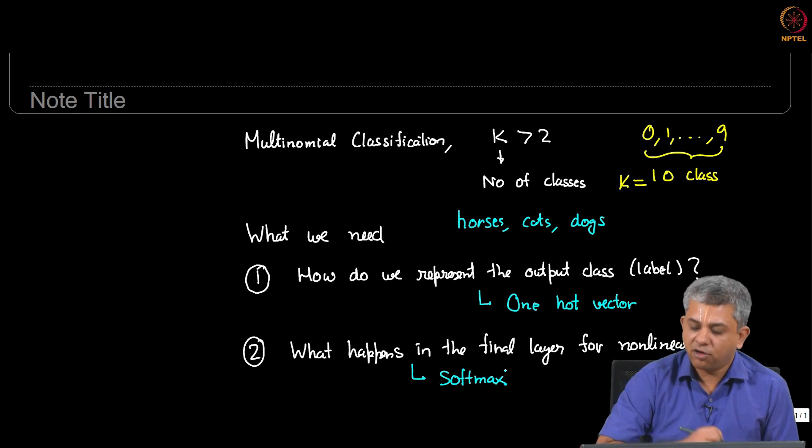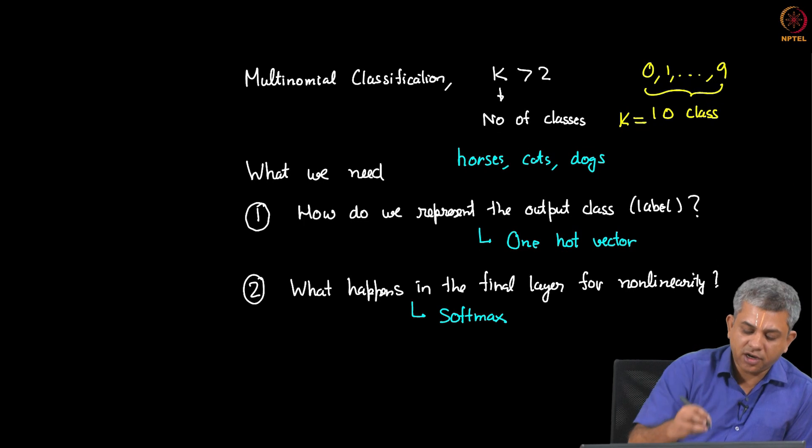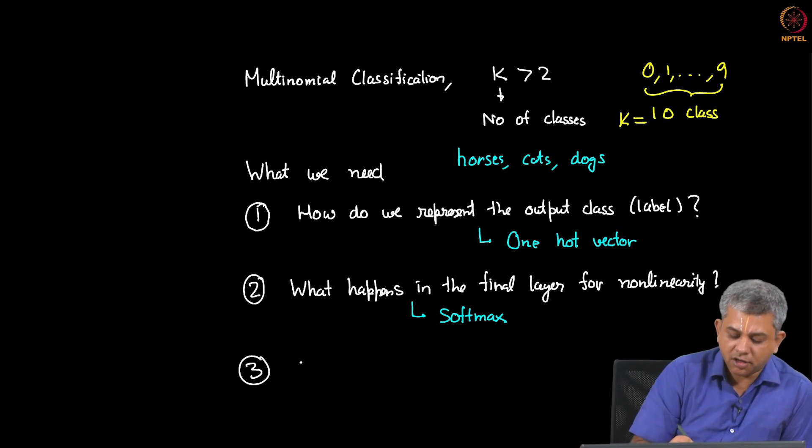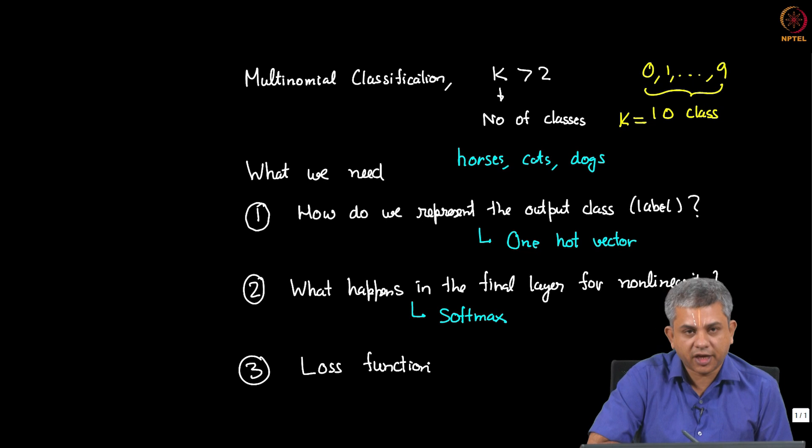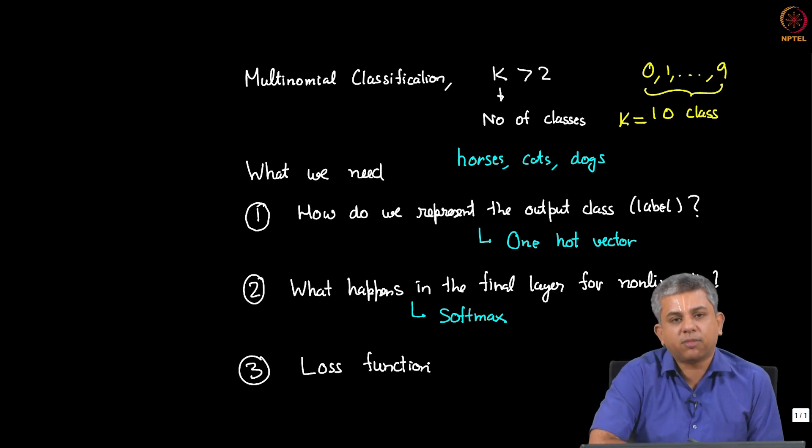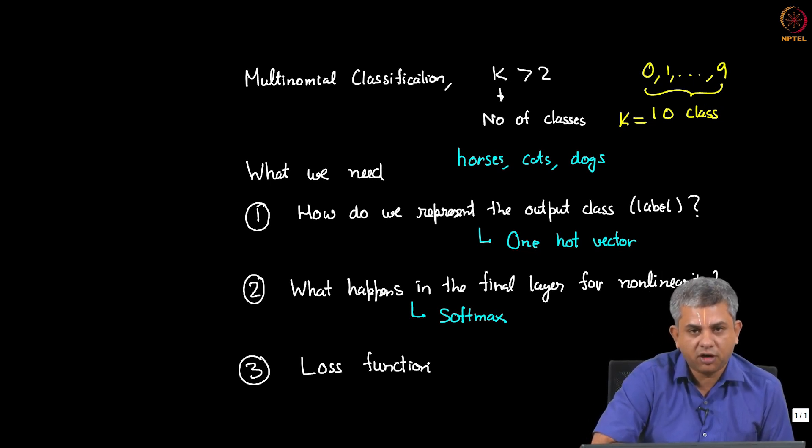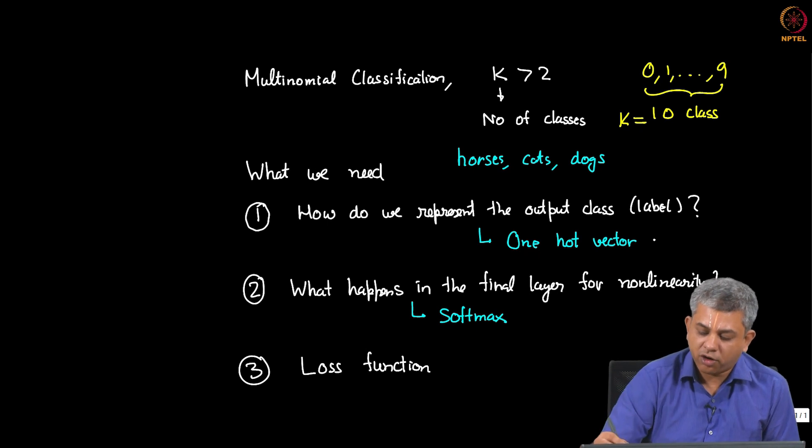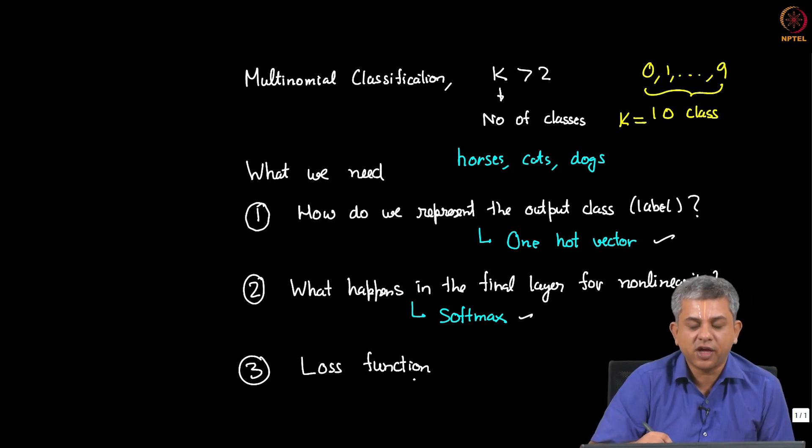So we will use that for multinomial classification. Finally, we need to answer how we are going to calculate the loss or cost function. For this case, we looked at the binary cross entropy as the cost function for binary classification. It turns out that we will use something very similar even for the multinomial classification. So in the videos that follow, we will look at one hot vector, we look at softmax and we look at how we are going to look at the loss function for multinomial classification.